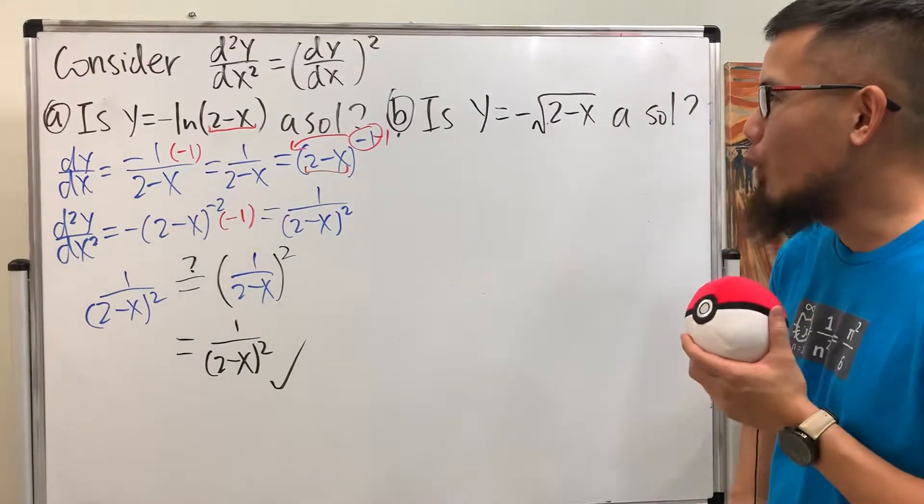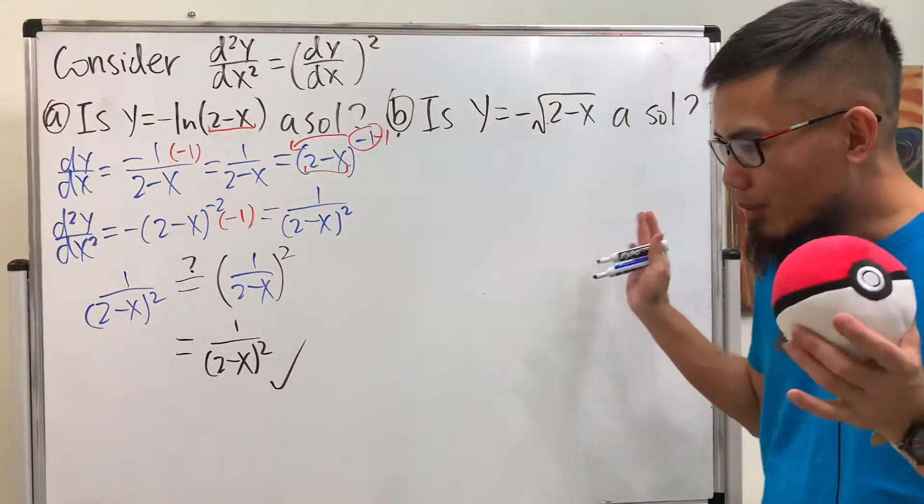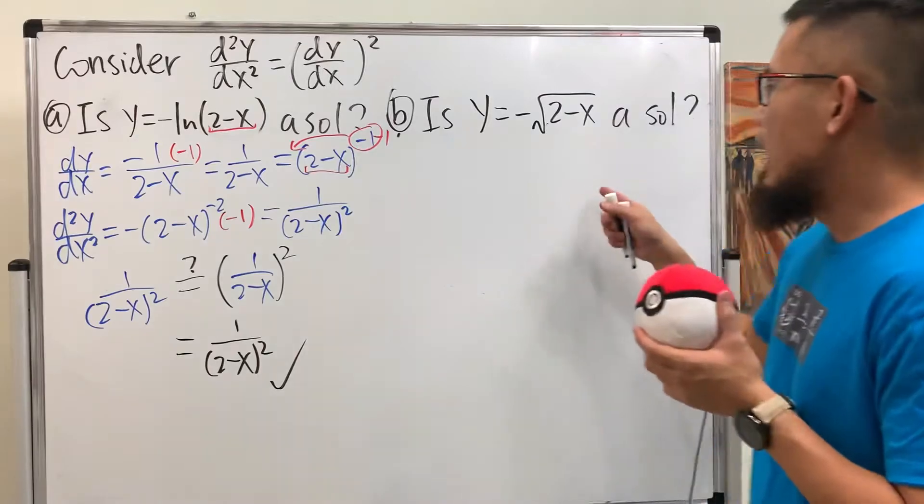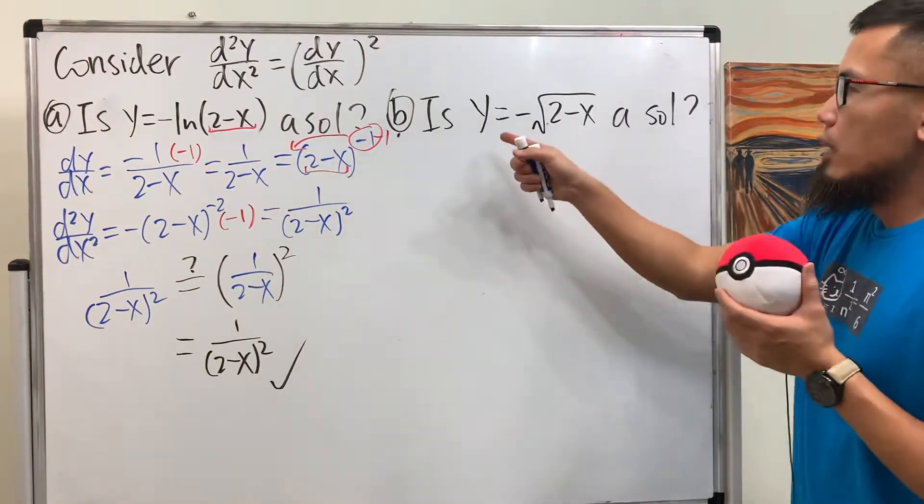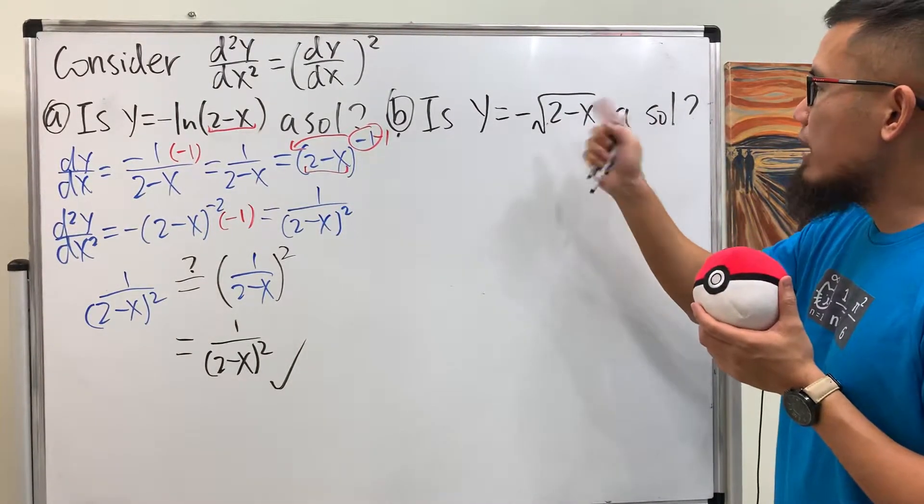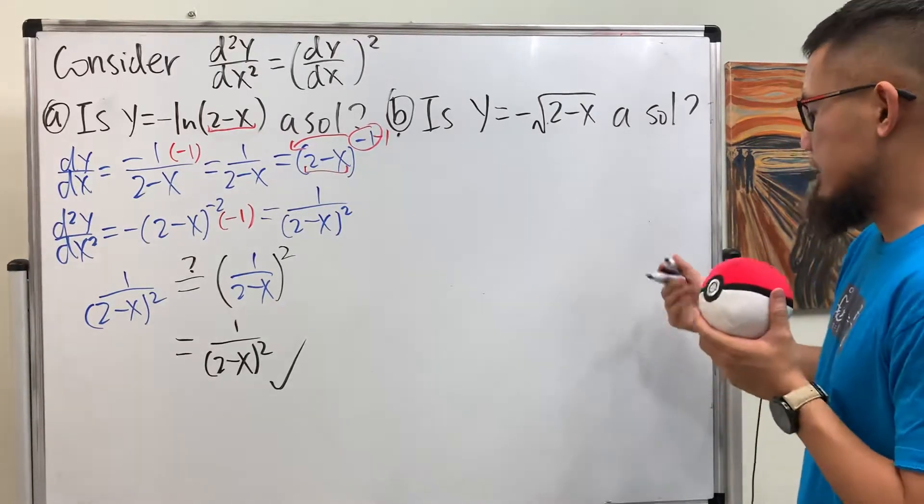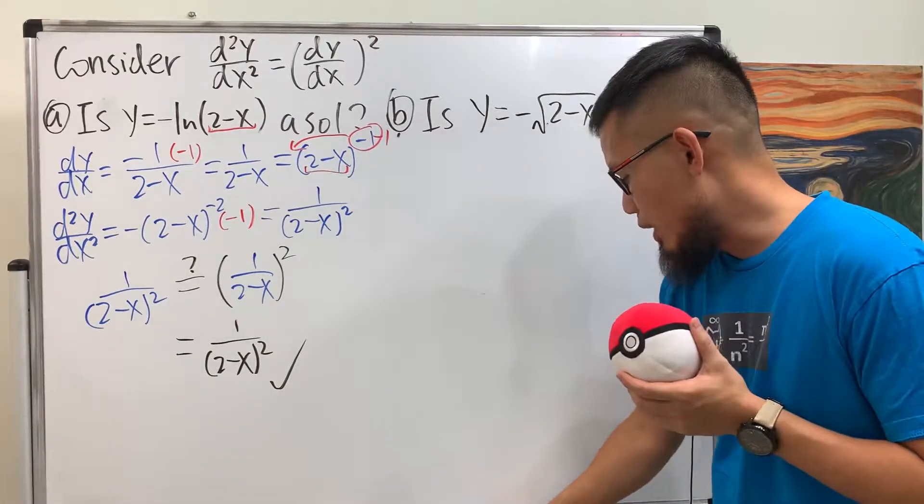So, does that mean that this is always true? Well, I don't know. I cannot say too much. Have a look right here. y is equal to negative square root of (2-x). Well, again, do the derivative twice, and see what happens.